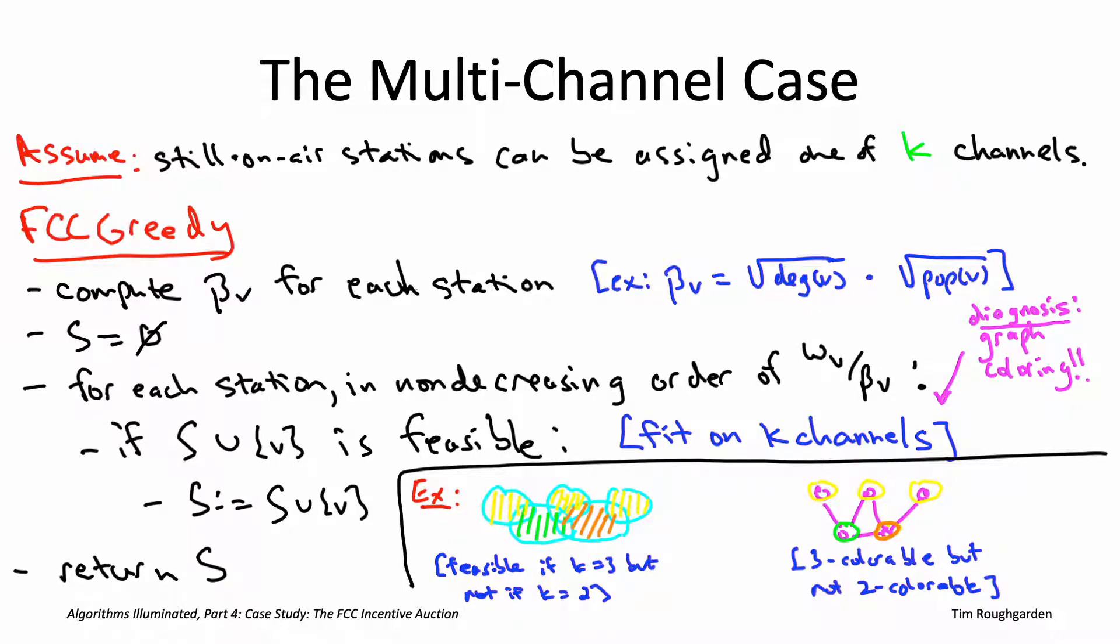As we saw in the videos on NP hardness, the graph coloring problem is in fact NP hard. It's NP hard already when K equals 3. Even just checking three colorability of a graph is an NP hard problem. Graph coloring is not hard if K equals 1 or K equals 2. K equals 1, it's kind of trivial. So basically a graph is one colorable if and only if it has no edges. And that's why this feasibility checking obstacle didn't come up when we were only thinking about the single channel case, when we're only thinking about K equals 1. It's as soon as you have three or more channels that graph coloring rears its ugly head.